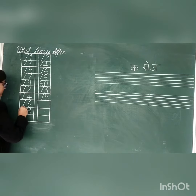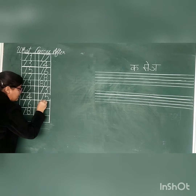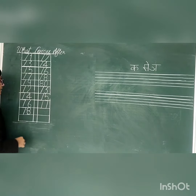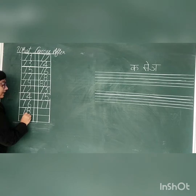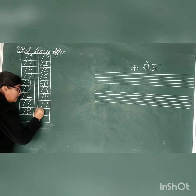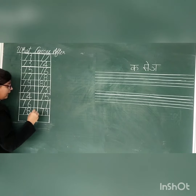Next: 7, 6, 76. 7, 6, 76 after: 7, 7, 77. Next: 7, 8, 78. Next: 7, 9, 79.